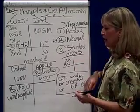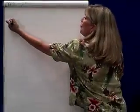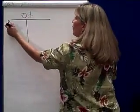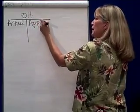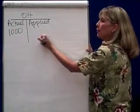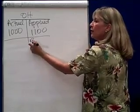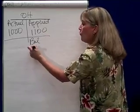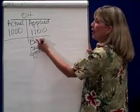Let's try the credit side. Going back to the overhead account: debits are actual, credits are the amount applied. Now say the actual was still $1,000 but we applied $1,100. In that case, the balance is a credit balance — we overdid it, we overapplied by $100.